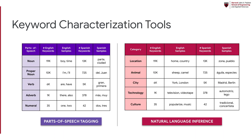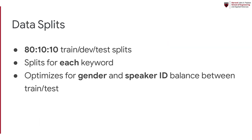We include open-source tools for exploring the types of keywords present in our dataset in multiple languages. We include random samples in English and Spanish characterized by parts-of-speech tags and a RoBERTa-based zero-shot model for semantic keyword characterization. We also include predefined train, dev, and test splits for each keyword in our dataset, and we optimize for balanced genders and minimal speaker overlap between the train and test sets.